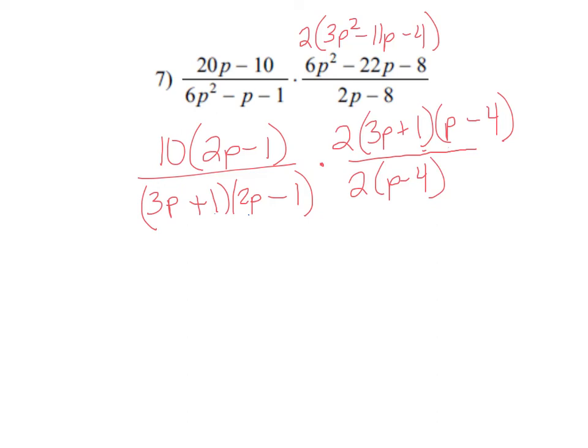I've got everything factored. Now I'm looking to cross stuff off. Anything that matches. Here's a 2p minus 1. Here's a 2p minus 1. 3p plus 1. 3p plus 1. P minus 4. P minus 4. 2. 2. Lots and lots of stuff that cancels out.